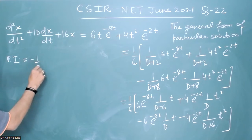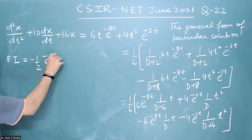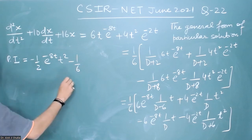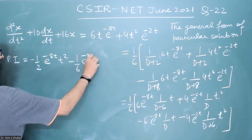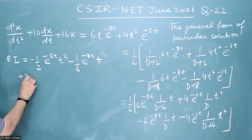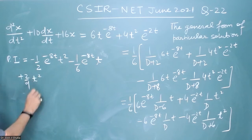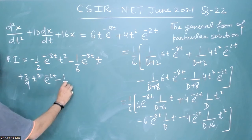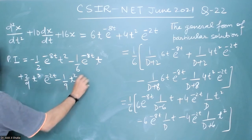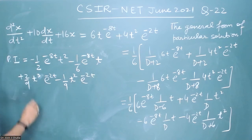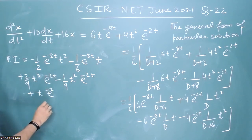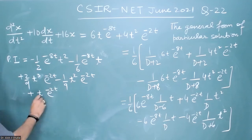The particular integral equals: −(1/2)·t²·e^(−8t) minus (1/6)·t·e^(−8t) plus (2/9)·t³·e^(−2t) minus (1/9)·t²·e^(−2t) plus (1/27)·t·e^(−2t).